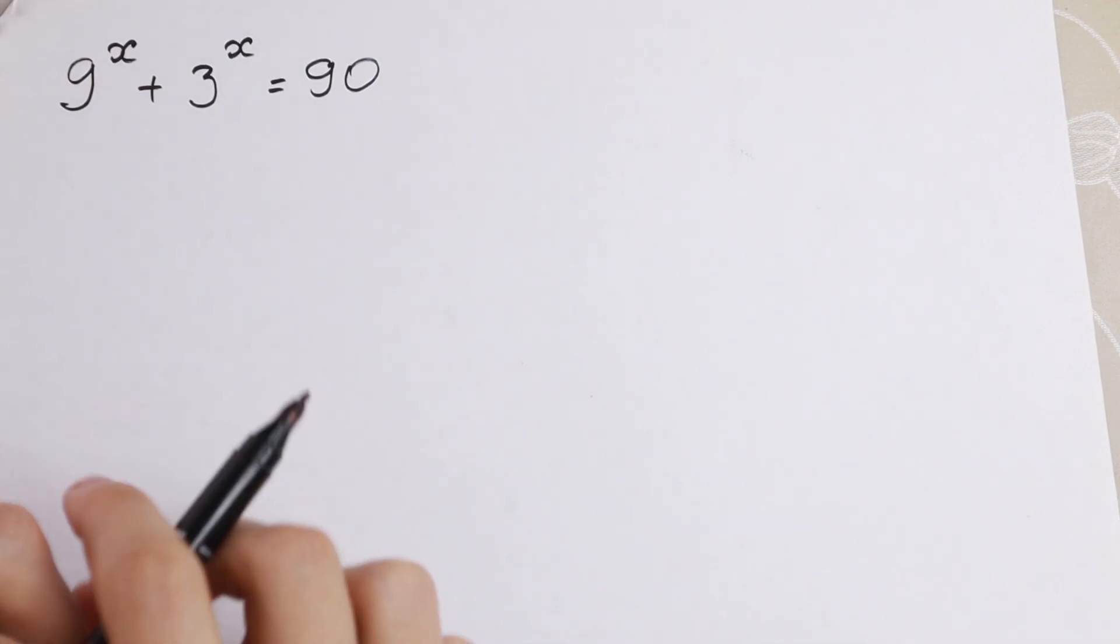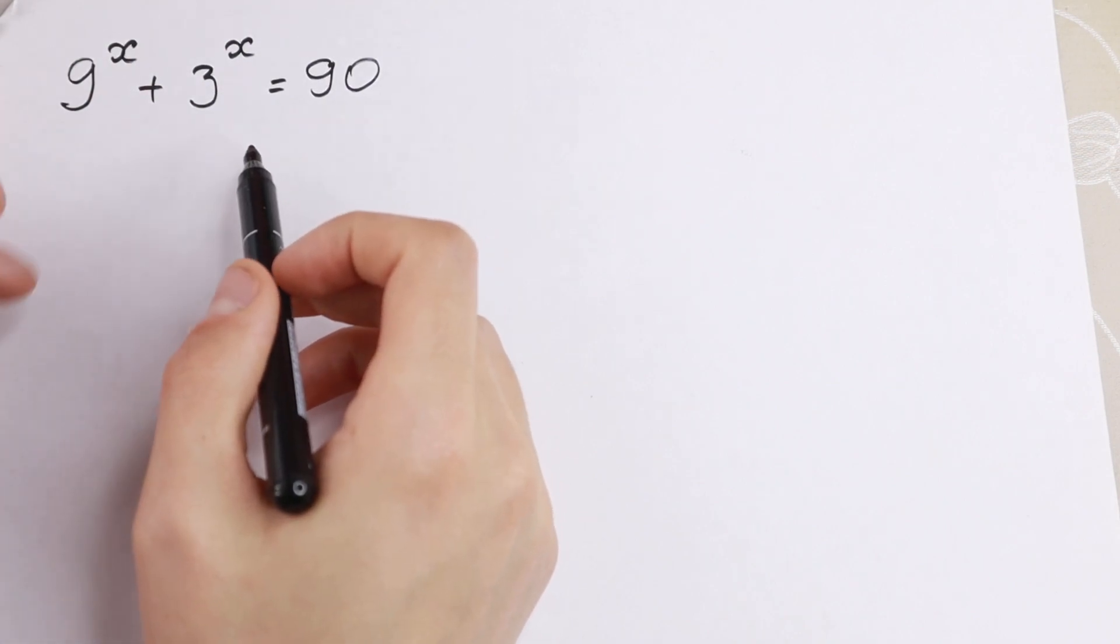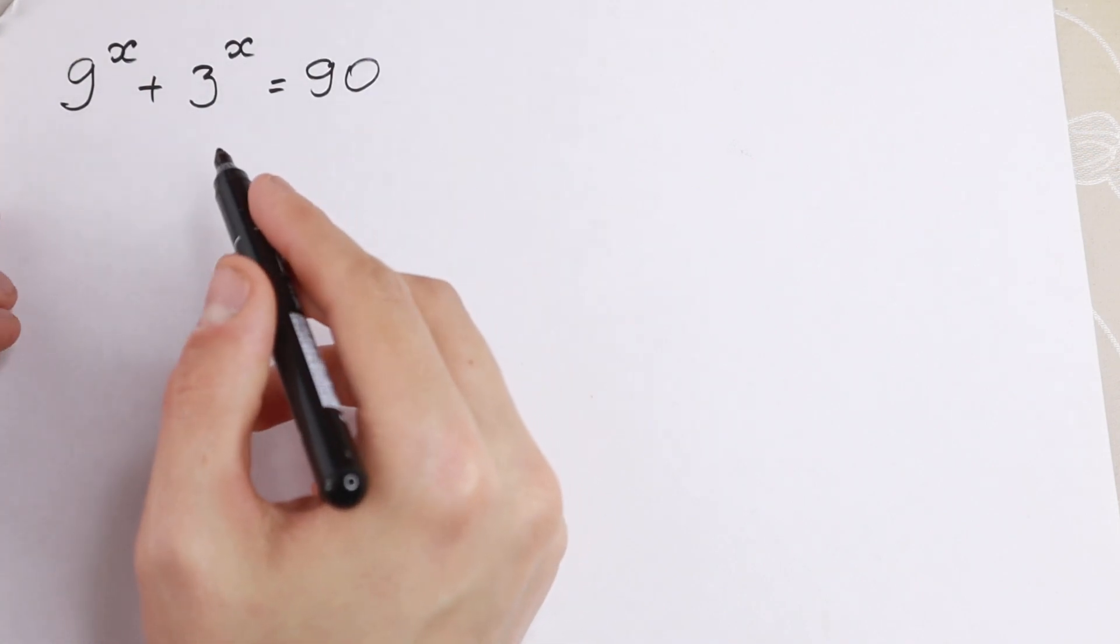Hello everyone, welcome back to MathMode. In this video we're going to solve this interesting exponential equation. So we have 9 to the power x plus 3 to the power x equal to 90. So how can I solve it? Take a look.